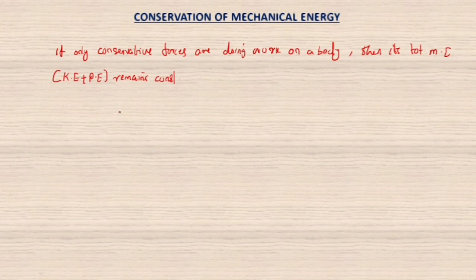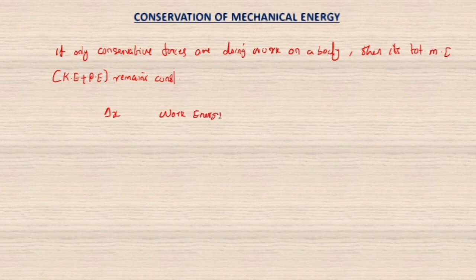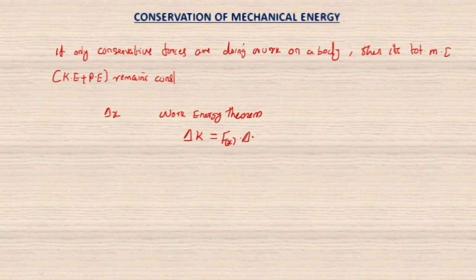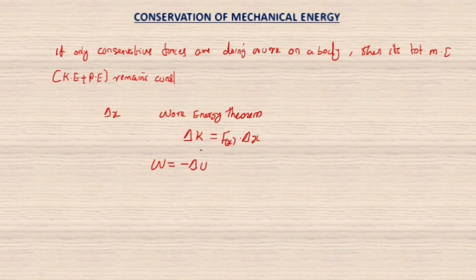Suppose a body undergoes a displacement Δx under the action of a conservative force. By the work-energy theorem, change in kinetic energy equals work done: ΔK = F_x Δx. We have also established that for a conservative force, work done W = −ΔU, or equivalently ΔU = −W.